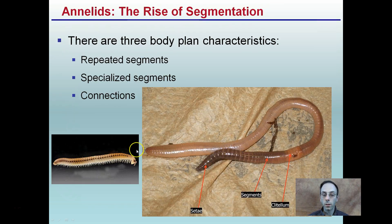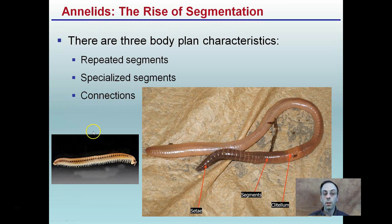Looking at the outside view, there's segmentation visible. There are three key body plan characteristics: repeated segments, specialized segments, and connections between segments. Each of these plays a role when we talk about segmentation of a particular animal.